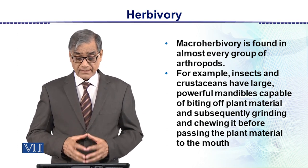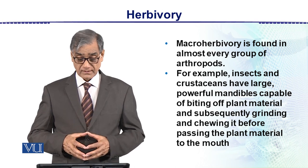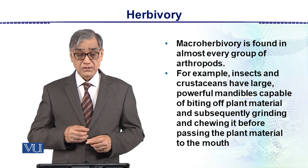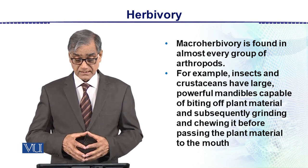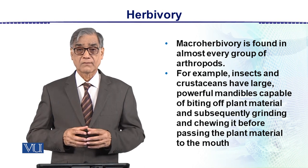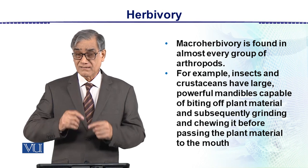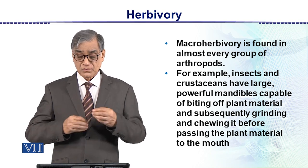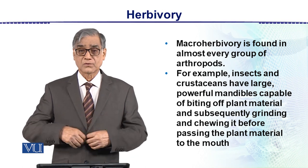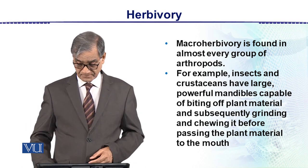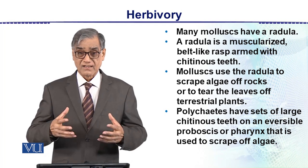These mandibles are capable of biting off plant material and subsequently grinding and chewing it before passing the plant material to the mouth. Since they cannot swallow large chunks, they first masticate — first bite, then chew — before taking the material into the body.